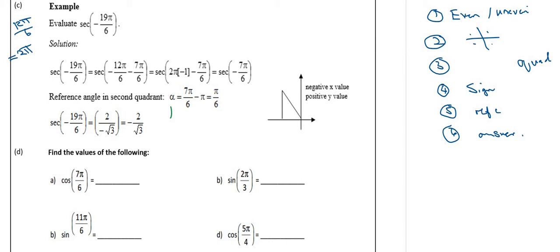The first thing is we look if it's even or uneven. This is a sec which is even, that means I can just ignore the negative. So my first step is going to be to write sec of just 19π/6.